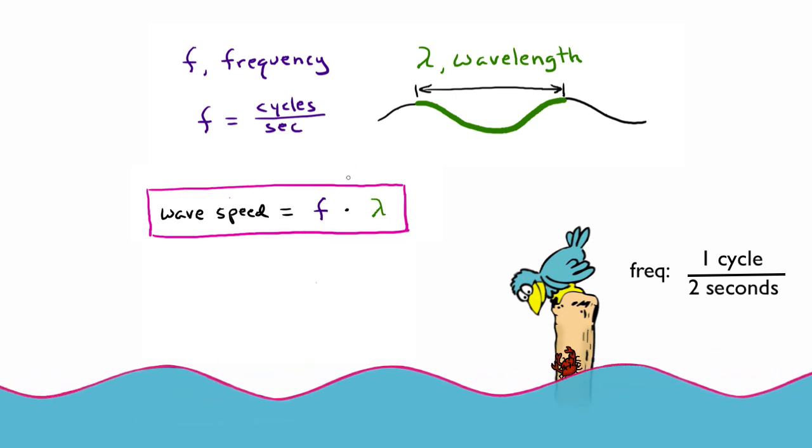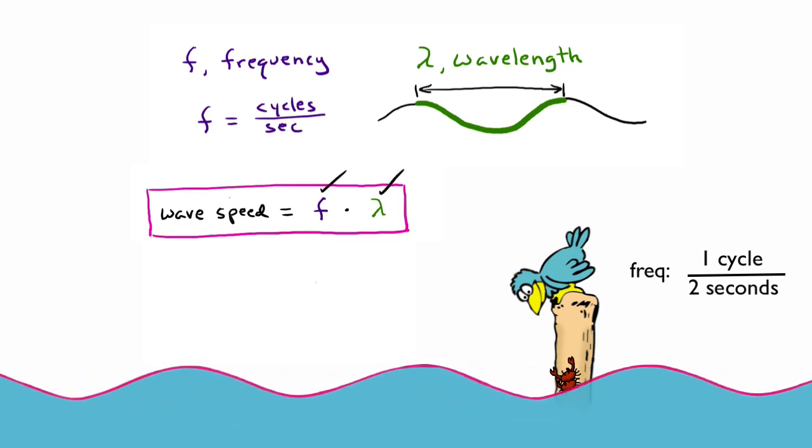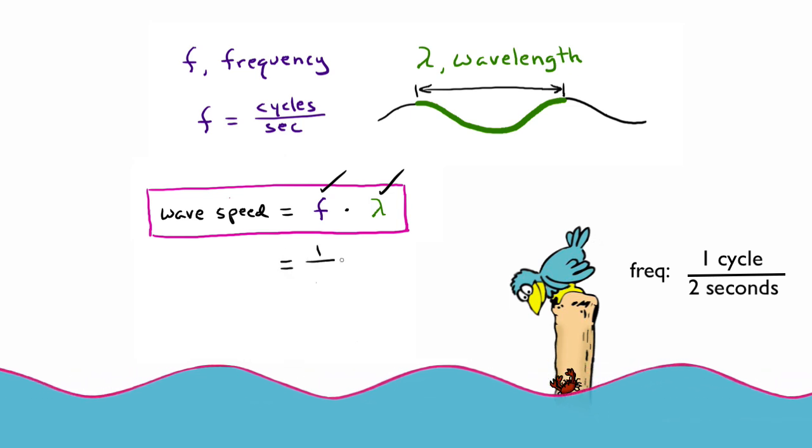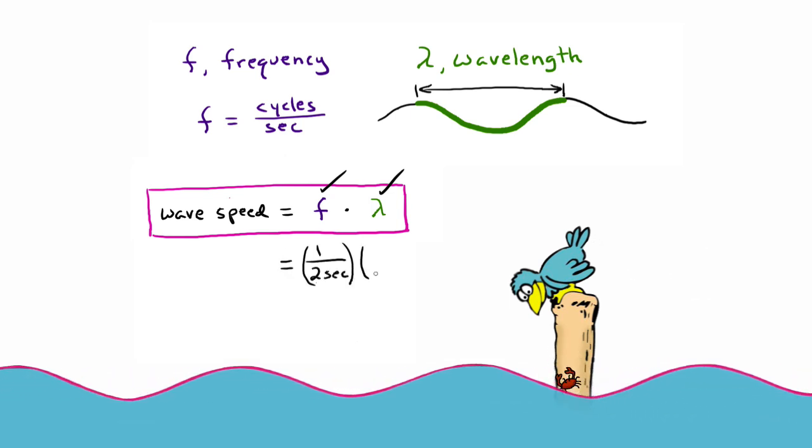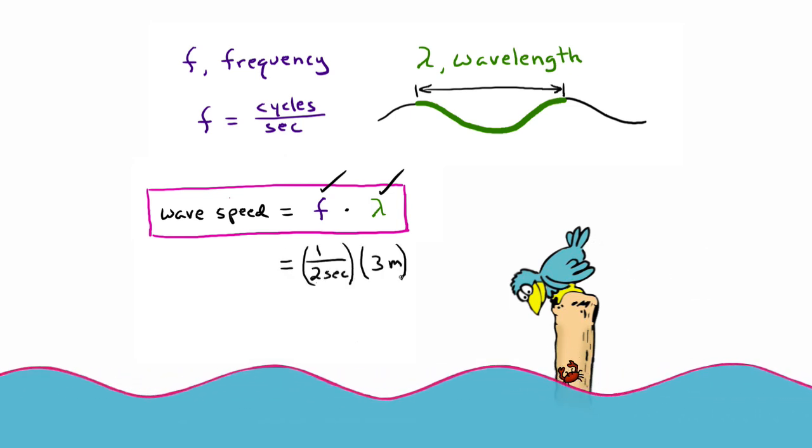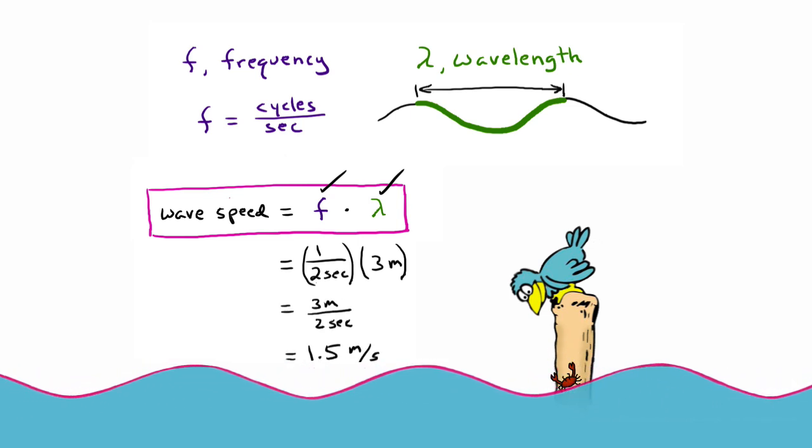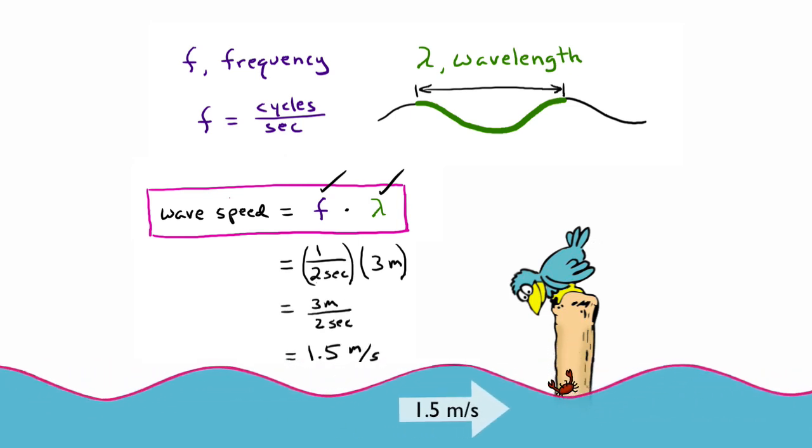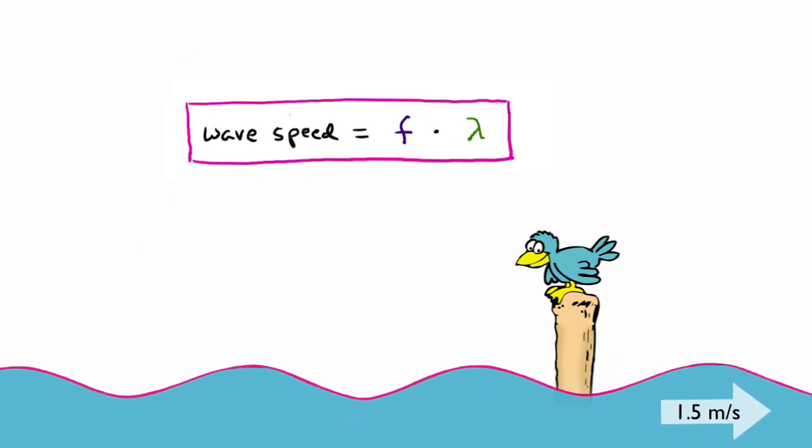The wave speed is frequency times wavelength. So that's one cycle per two seconds times three meters equals 1.5 meters per second. This relationship of frequency times wavelength equals wave speed holds true for all kinds of waves.